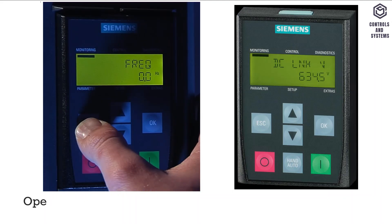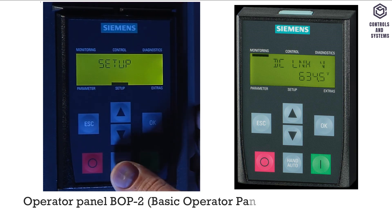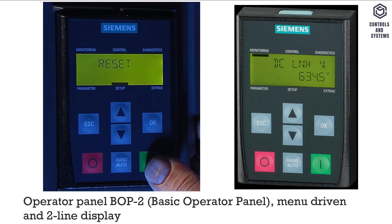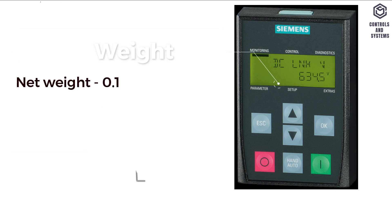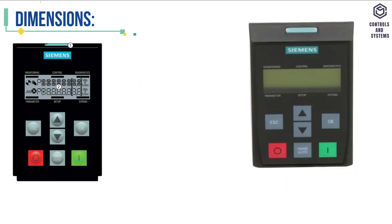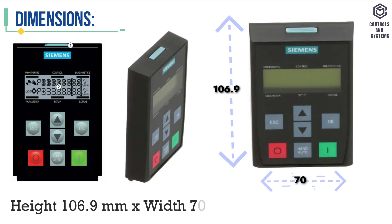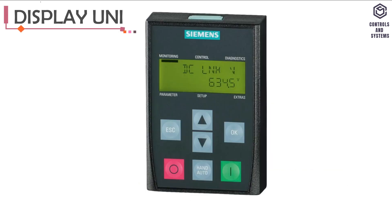BOP2 Operator Panel: BOP2 means Basic Operator Panel, menu-driven with a two-line display. Degree of Protection IP55. Gross weight is 0.10 kg. Dimensions: Height 106.9mm, Width 70mm, Depth 19.7mm.